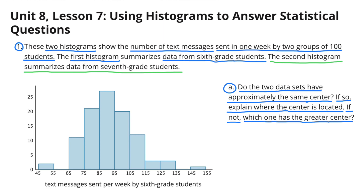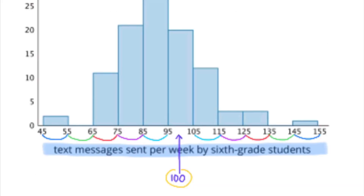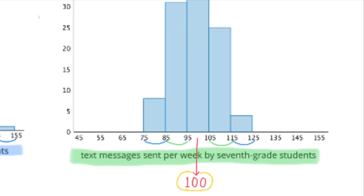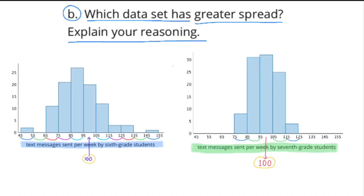Part A: Do the two data sets have approximately the same center? If so, explain where the center is located. If not, which one has the greater center? The data set for the 6th graders has a center of 100, and the center for the data set of the 7th graders is also 100. So neither the 6th graders nor the 7th graders have a larger or smaller center — they both have a center of 100.